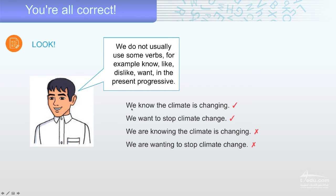I'll give you four examples. We know the climate is changing. That's correct. We know. We want to stop climate change. That's correct. Three. We are knowing the climate is changing. That's incorrect. We don't use know with the present progressive.